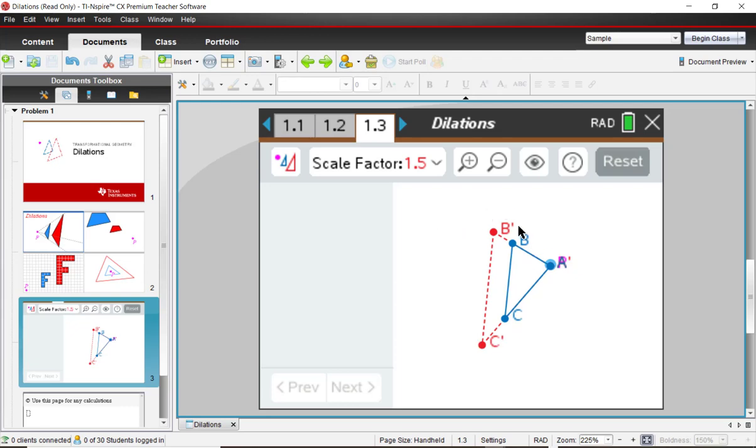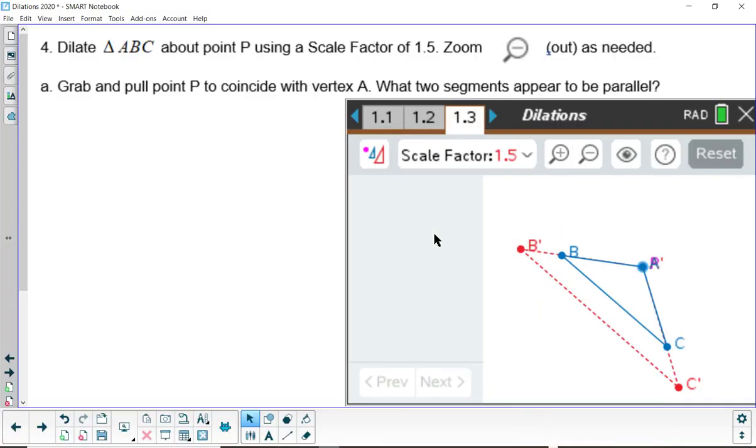Look at these segments here. It's asking about BC and B prime C prime. I'll put A on point P on top of B. And I'll put P on top of C. And based on that, you should now be able to answer those questions. So go ahead and press pause and resume when needed.